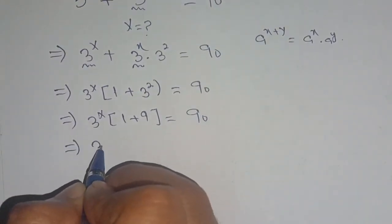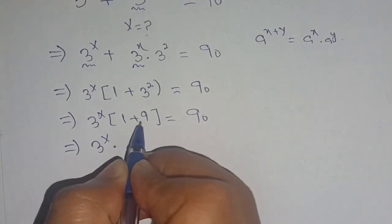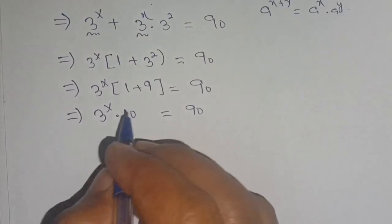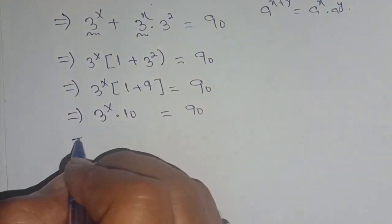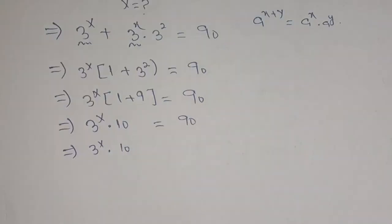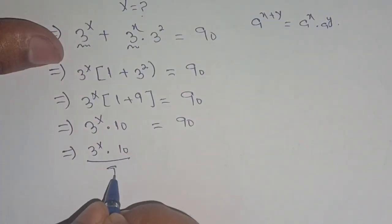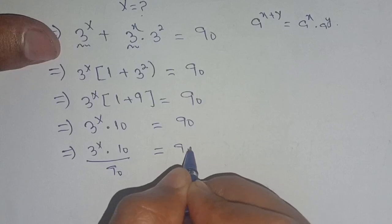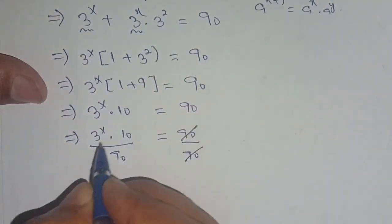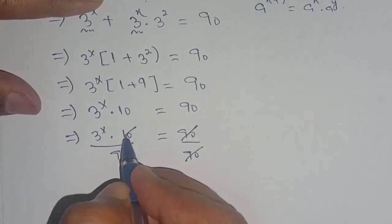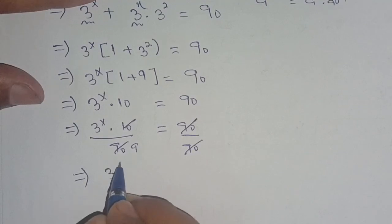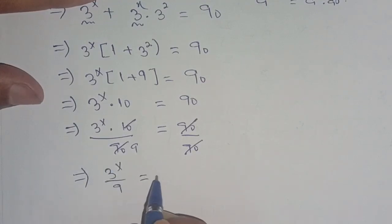That is equal to 9, so the equation is equal to 90. Which implies 3 raised to power x times 9 plus 1, it becomes 10, is equal to 90. On dividing both sides by 90, we get 3 raised to power x times 10 divided by 90 is equal to 90 divided by 90. We can cancel out 90, and 10 times 9 becomes 90, which implies 3 raised to power x divided by 9 is equal to 1.